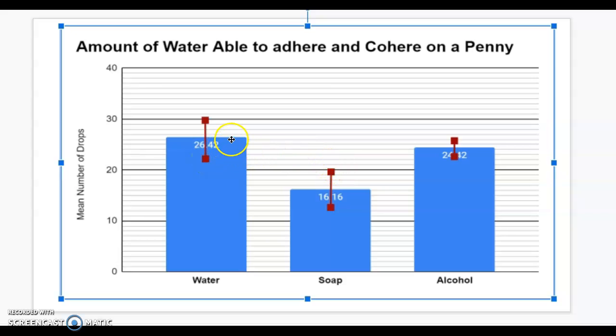So those don't overlap. So that means that we are 98% confident that these means are actually different. And what do I mean by that? Because a lot of people would be like, well yeah, of course those averages are different. You look at 26.42 and that's different than 16.16.